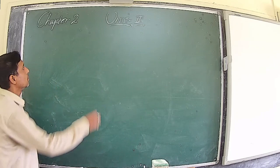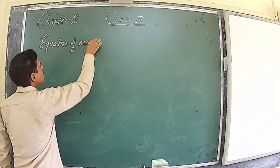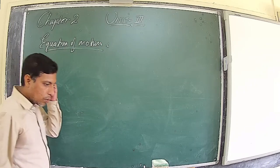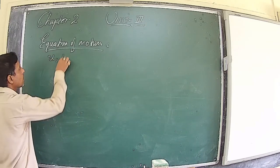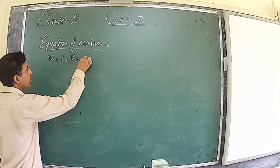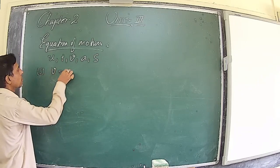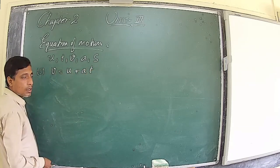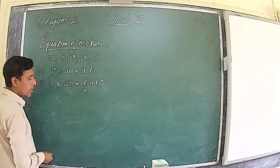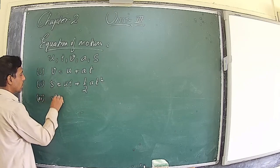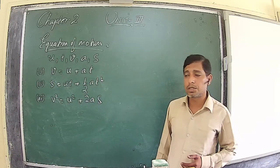Now in our last unit, Unit 3 from this chapter, we have to discuss equations of motion. The equations of motion correlate: if a body is moving with an initial velocity u and after time t it gains velocity v, with some acceleration, and covers displacement s. The first equation is v = u + at, the second is s = ut + ½at², and the third is v² = u² + 2as.